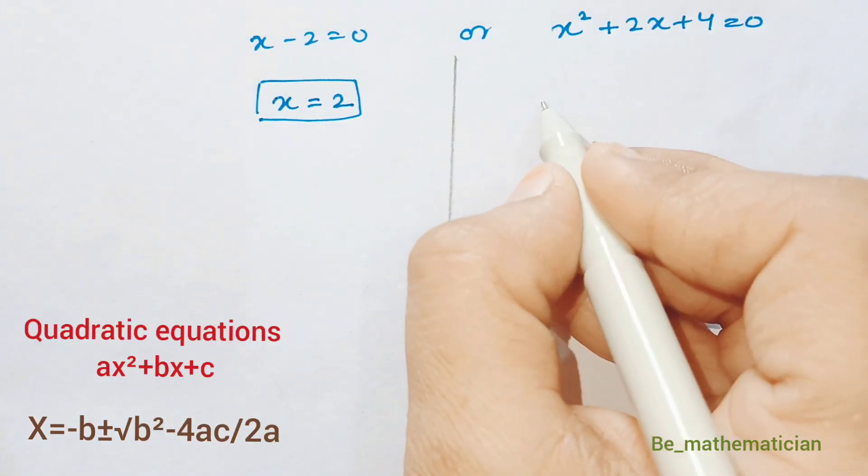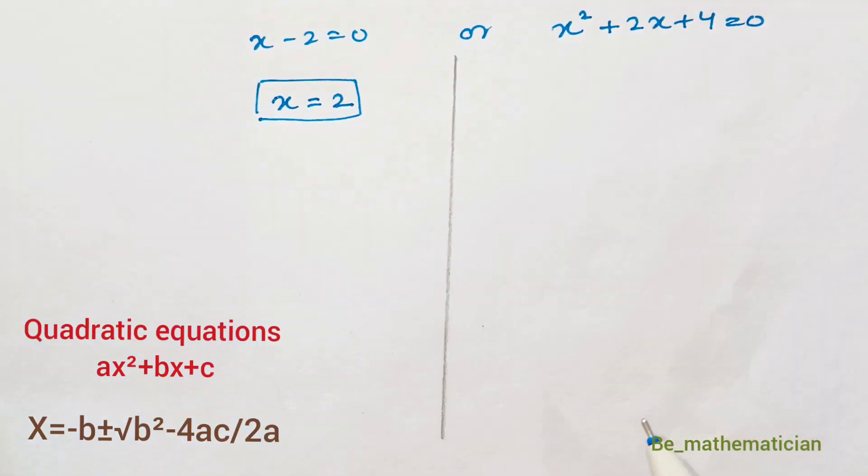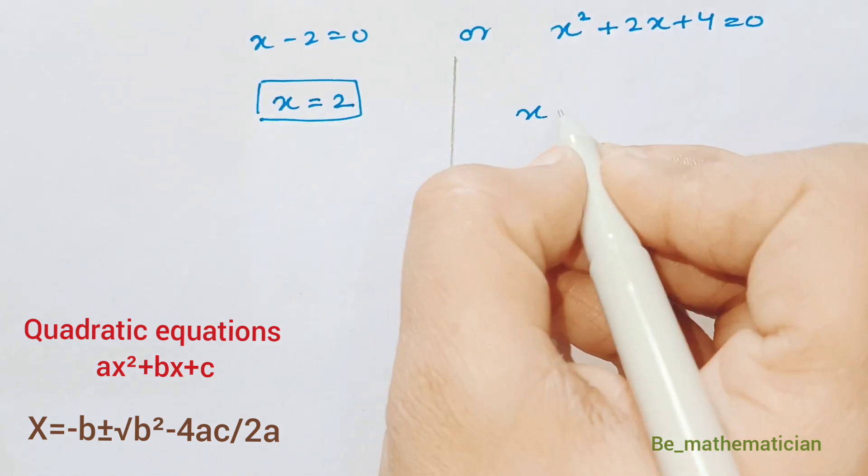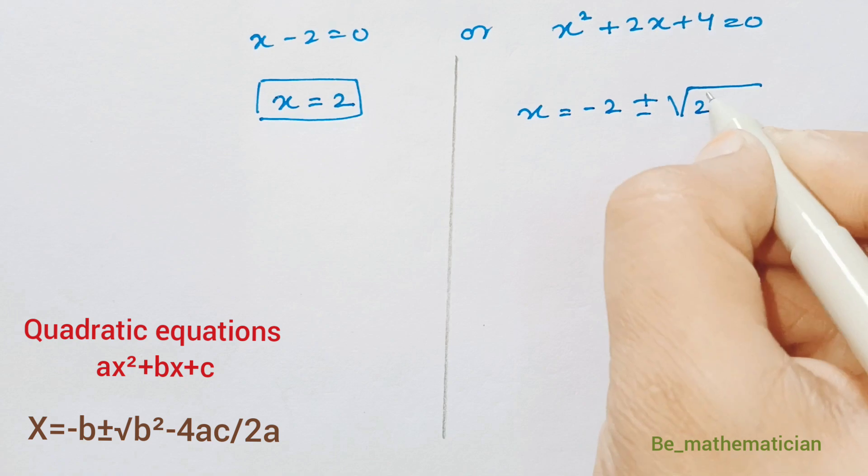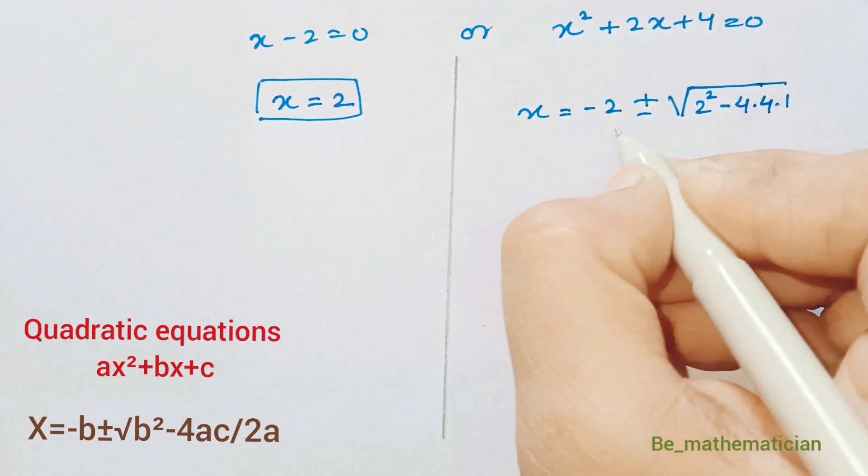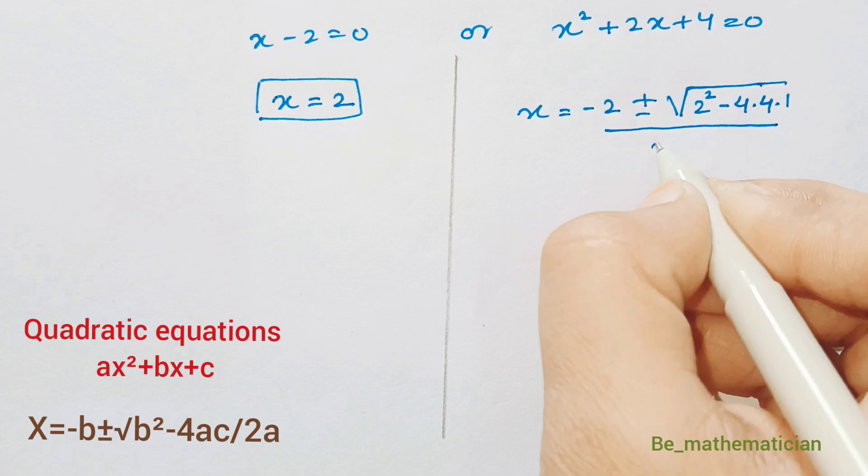This is in the form of quadratic equation. So we can solve it by formula method. That is x equals minus 2 plus or minus under root of 2 square minus 4 into 4 into 1 divided by 2 into 1.